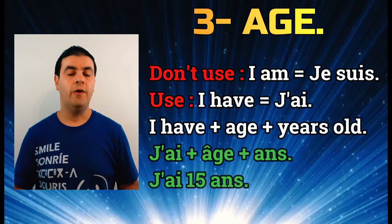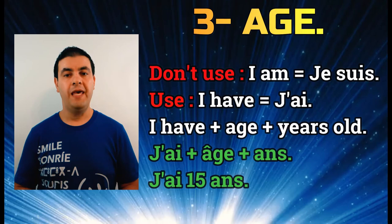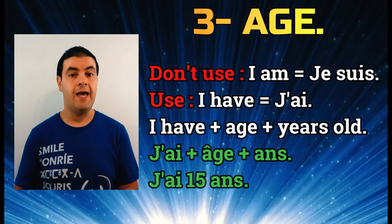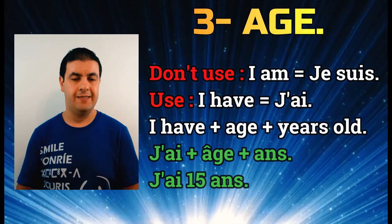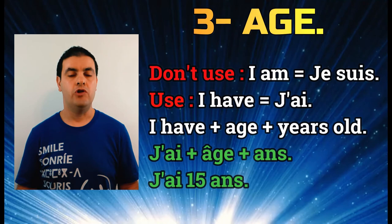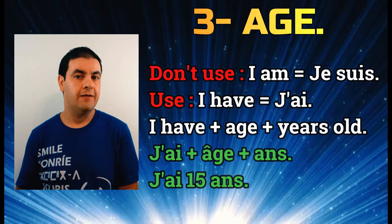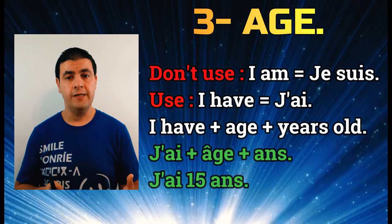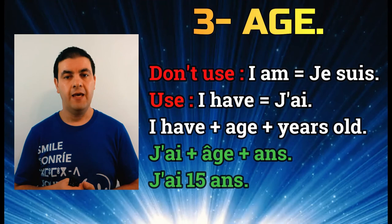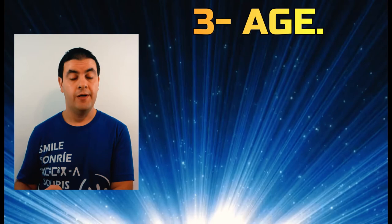Make sure you add 'ans' after the number — it means 'years old.' You don't pronounce the 's' at the end, so you just say 'j'ai quinze ans.' It's more appropriate to say 'I have 16 years old' rather than just 'I have 16.' In English you can say 'I am 15' but in French it's much better to add the years old after the number.